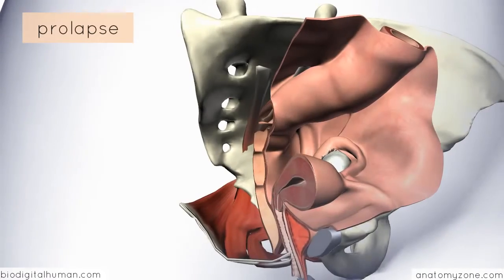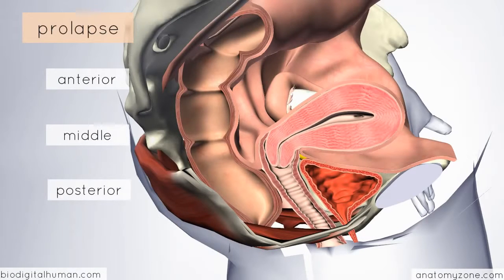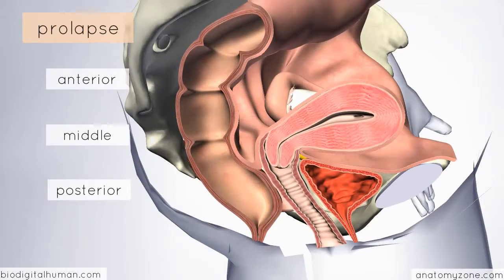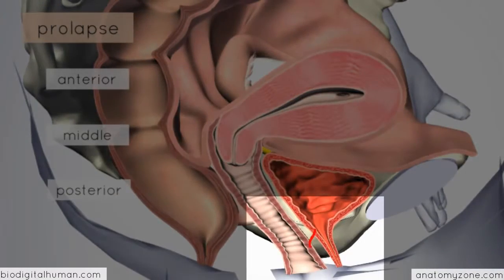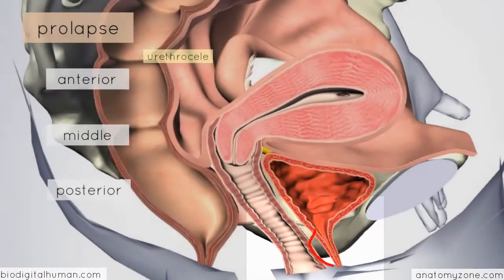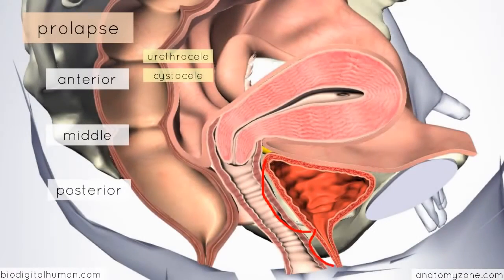In terms of the types of prolapse that you can get, it's useful to think in terms of anterior, middle, and posterior compartments. Anteriorly, you can get a bulging out of the urethra into the anterior vaginal wall — this is called a urethrocele. Likewise, you can get the bladder bulging into the anterior wall a little bit higher up, which is called a cystocele. If you get both bulging into the vaginal wall, this is called a cystourethrocele.